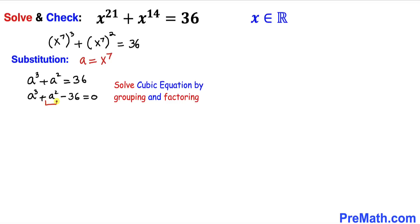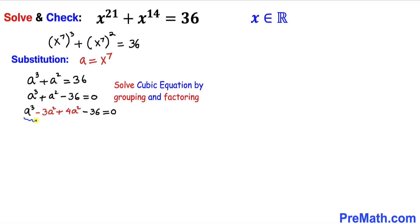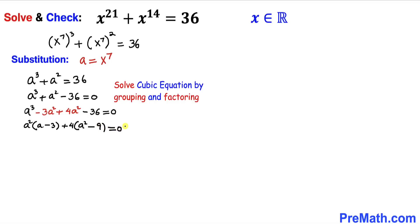Let's focus on the a² term. This can be written as -3a² + 4a², so in the next step I replace a² with that expression. Now between the first two terms a² is in common, and between the next two terms 4 is in common. So I can factor out a² from the first group, giving (a - 3), and factor out 4 from the second group.